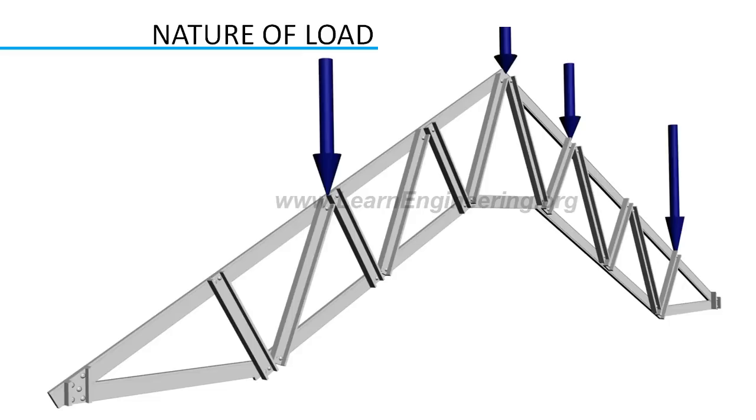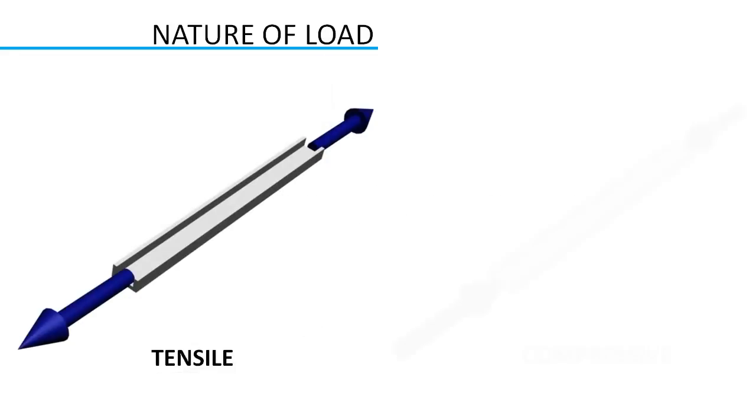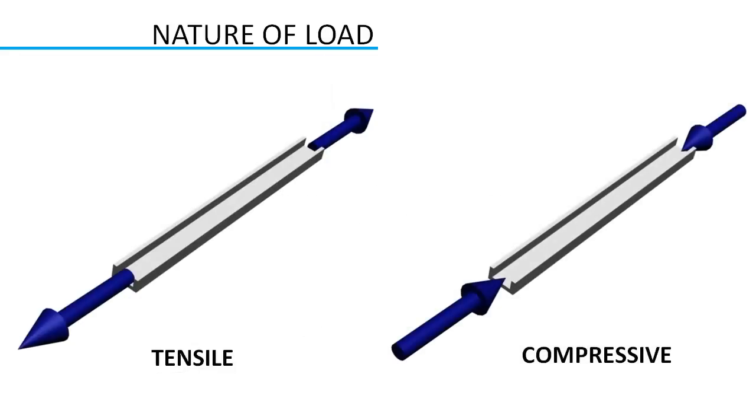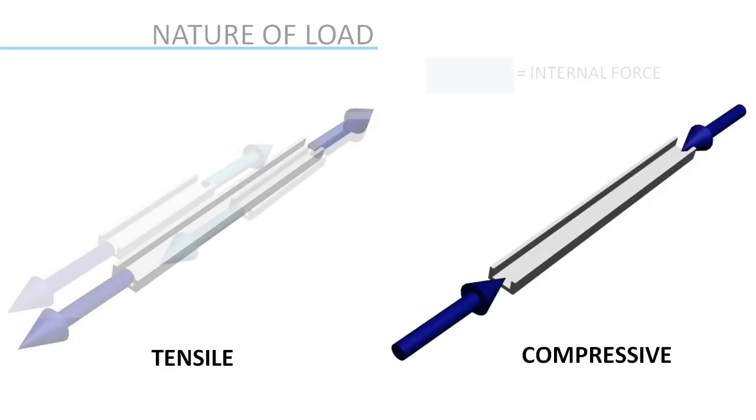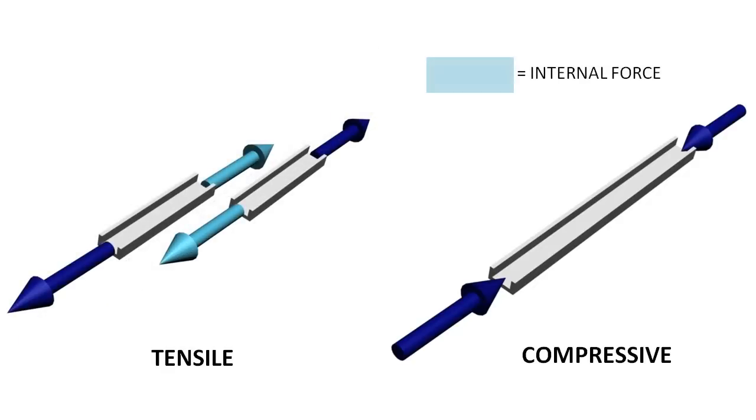Force developed in a truss member is always axial. It can be either tensile or compressive. If a member is under tensile load, this will be the direction of internal force developed. You can notice that under tensile load, internal force developed in the member is directed away from the joint.